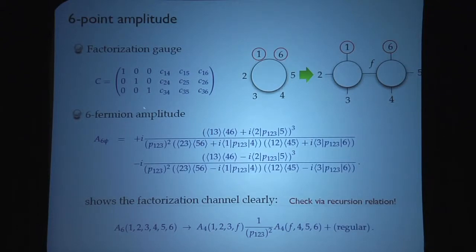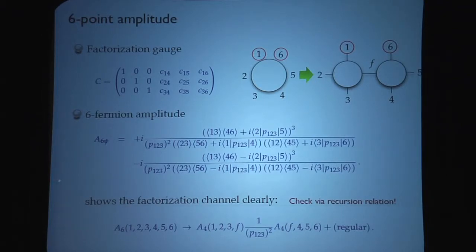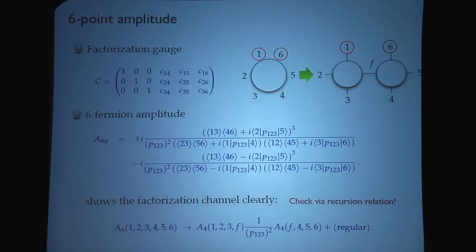Here is an example of an explicit form of the amplitude. This is the six-point amplitude — actually the six-fermion component of it. As you can easily guess, this is much simpler than whatever you can get from Feynman rules. Also, as I already said, the Grassmannian formula has the BCFW recursion relations built in, so you can see the BCFW factorization without much difficulty, and that is the case in this particular example.